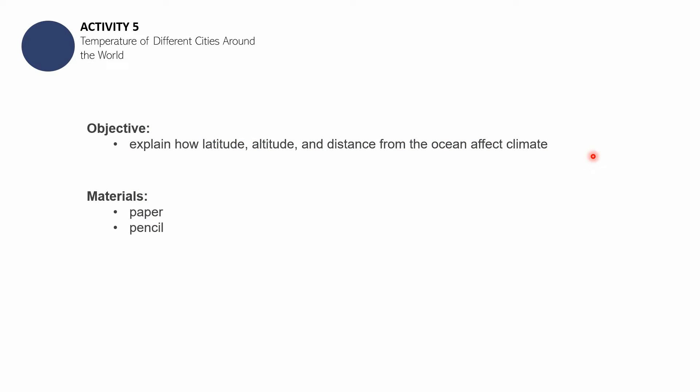We now proceed with the next part, which is Activity Number 5. By the end of this activity, you should be able to explain the climate of a place in terms of its latitude, altitude, and distance from the ocean. What you need to use is your science notebook or a piece of paper to do this activity, and a writing instrument such as a pencil. Have it prepared, have it ready.